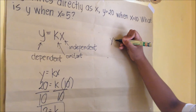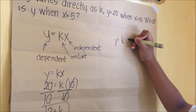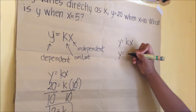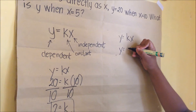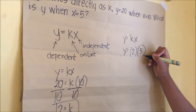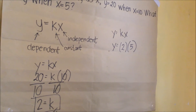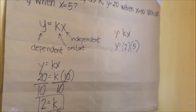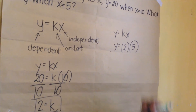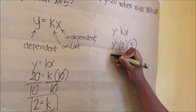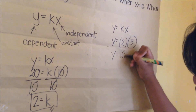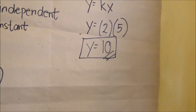The solution is not yet finished because in this problem, we need to get the value of the other y. Back to the first step, we already have the value of the constant. Now we can substitute the value of the variable n and the constant. Multiply the value of x and the constant. And the final answer is y is equal to 10.